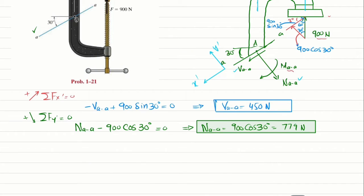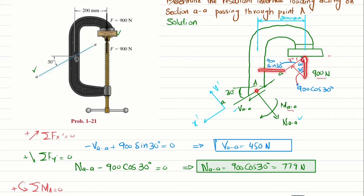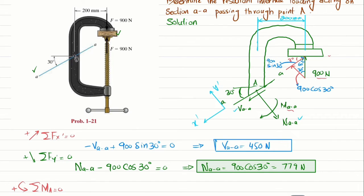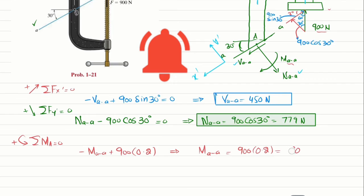We will find moment M_AA by applying the equation of equilibrium: the sum of all moments about point A equals zero, taking counterclockwise as positive. About point A, M_AA is negative, and the moment from the 900 N load with a perpendicular distance of 200 mm (0.2 m) is positive counterclockwise. So: minus M_AA plus 900 × 0.2 equals zero, giving M_AA equals 180 Newton·meter.